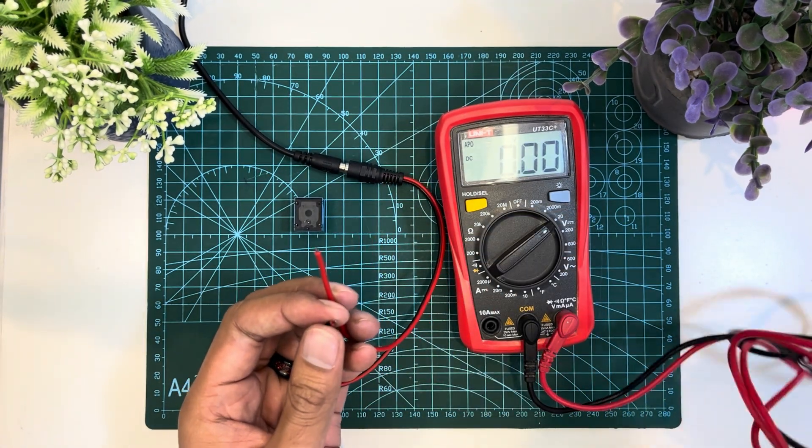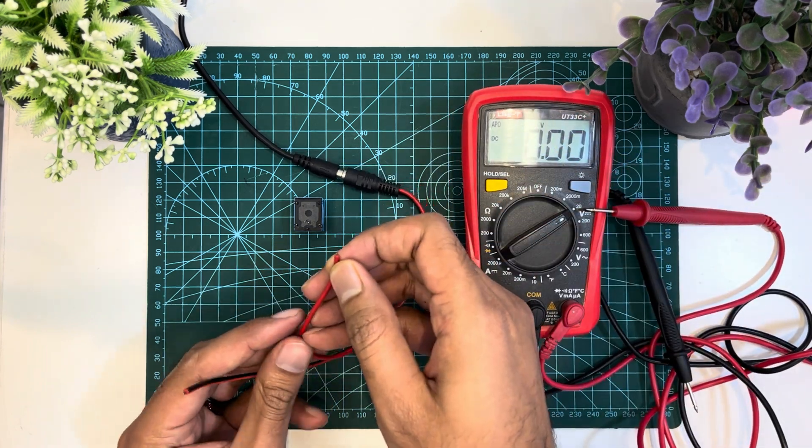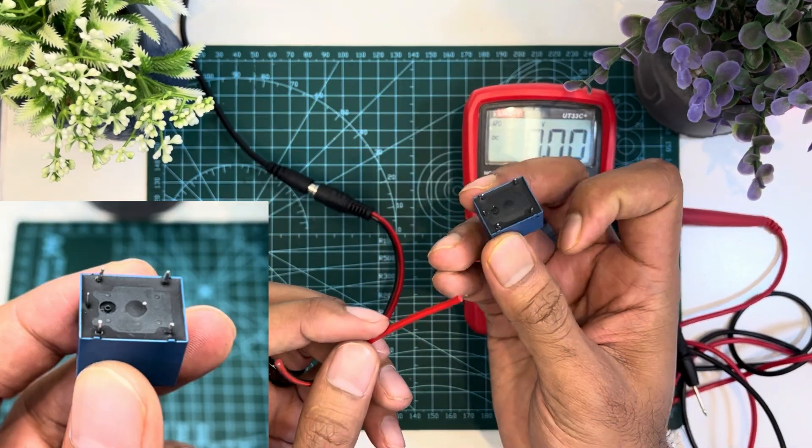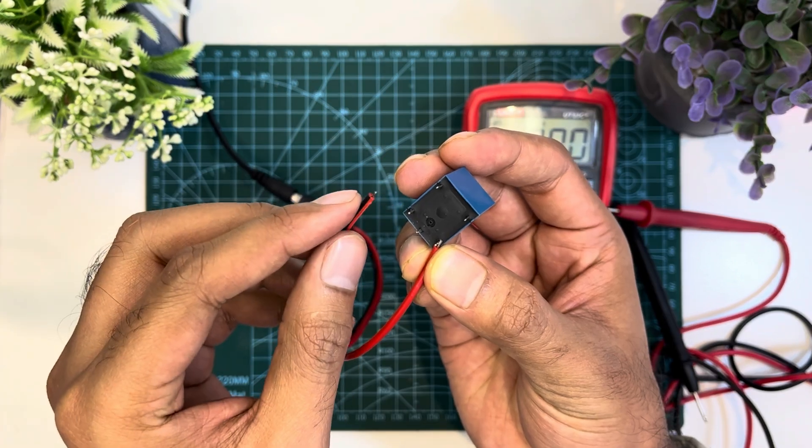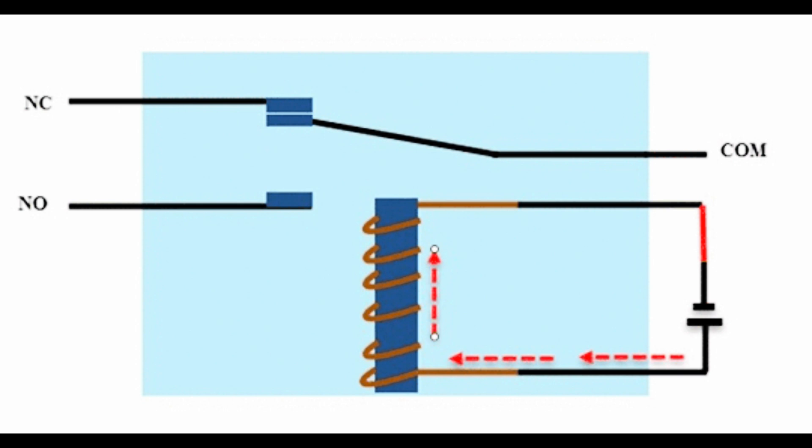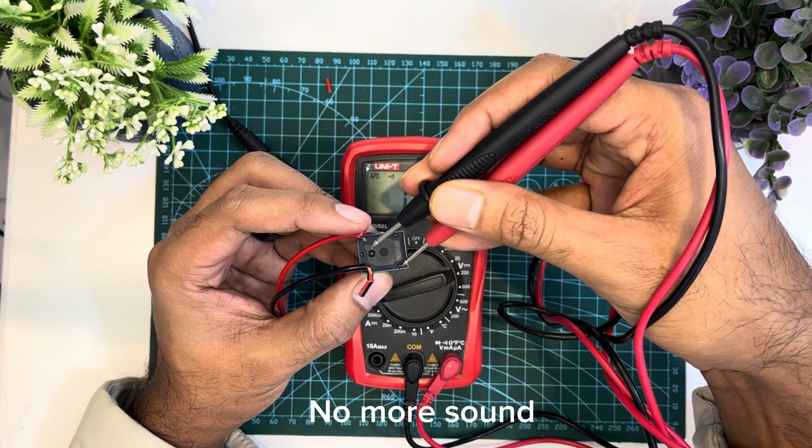After triggering the relay, I will check the normally open and normally closed pins. So now I am connecting 5V DC with the coil pins. As soon as I connect 5V DC, the relay triggers and the normally closed pin becomes open with the common pin.